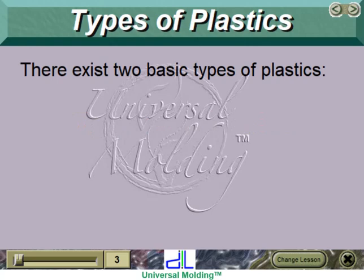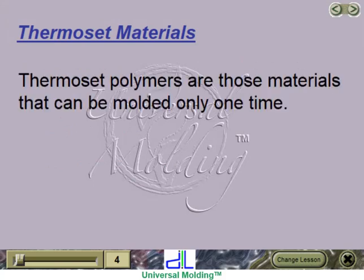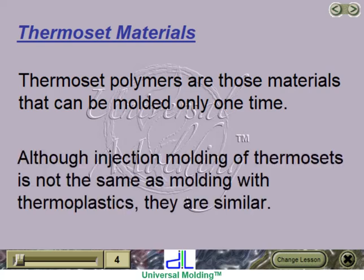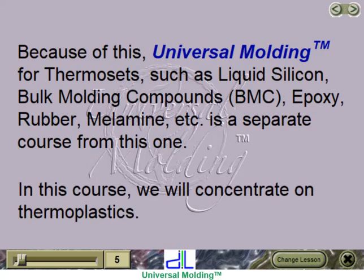There exist two basic types of plastics: thermosets and thermoplastics. Thermoset polymers are those materials that can be molded only one time. Although injection molding of thermosets is not the same as molding with thermoplastics, they are similar. Universal molding for thermosets — such as liquid silicone, bulk molding compounds (BMC), epoxy, rubber, melamine, etc. — is a separate course from this one. In this course, we will concentrate on thermoplastics.